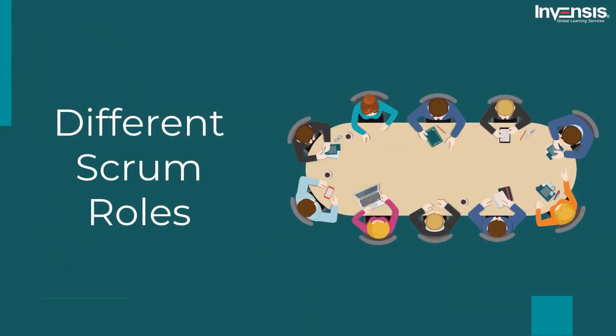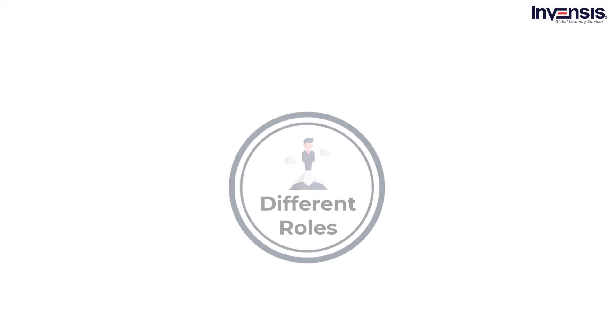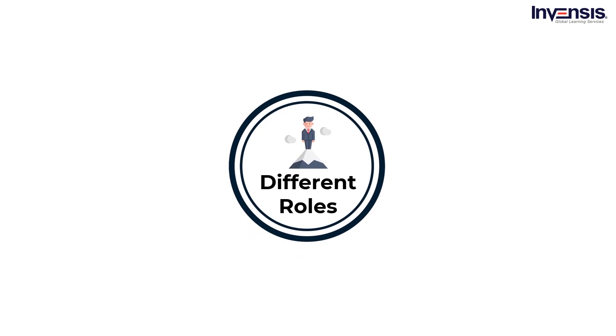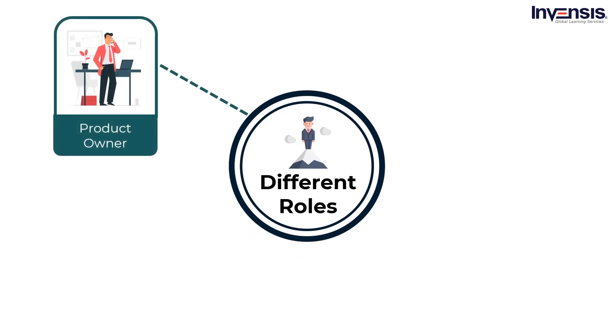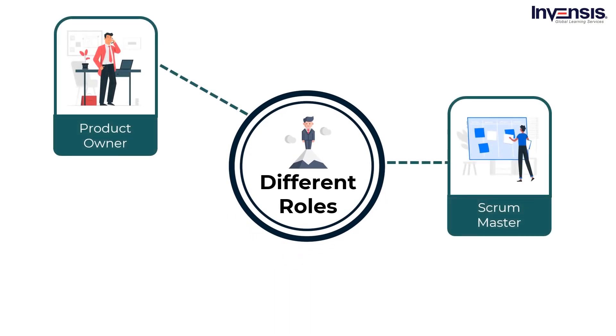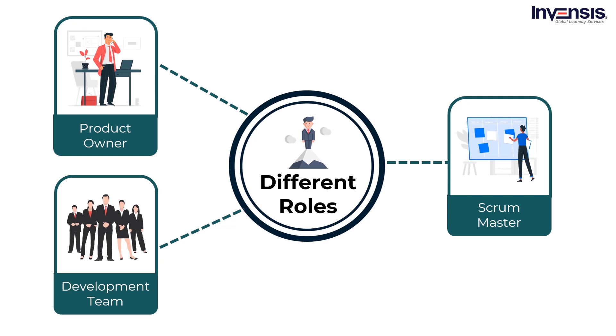Let us move on to our next topic and talk about the different Scrum roles, to understand what part each role plays in Scrum meetings. The responsibilities assigned to people working in the Agile framework are one of the most important aspects of Scrum, and Scrum roles are quite different from that of a traditional methodology. There are three major Scrum roles: the product owner, the Scrum master, and the development team.